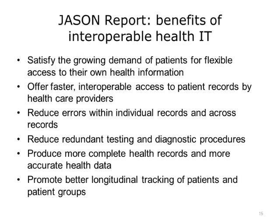In April 2014, the Jason Group published a report entitled A Robust Health Data Infrastructure. The Jason Group is an independent group of scientists that advise the federal government. This report helped shape the ONC interoperability vision. The Jason Report listed the following benefits of interoperable health IT: 1. It can satisfy the growing demand of patients for flexible access to their own health information. 2. It can offer faster interoperable access to patient records by health care providers. 3. It can reduce errors within individual records and across records. 4. It can reduce redundant testing and diagnostic procedures. 5. It can produce more complete health records and more accurate health data, and it can promote better longitudinal tracking of patients and patient groups.